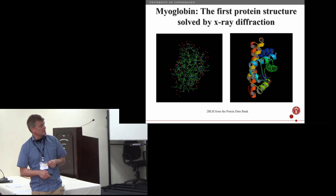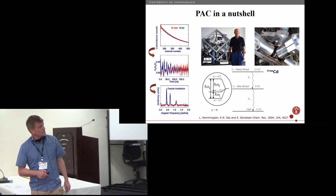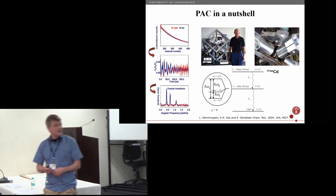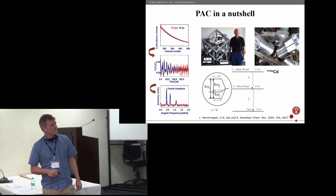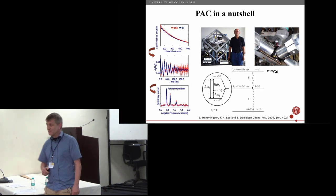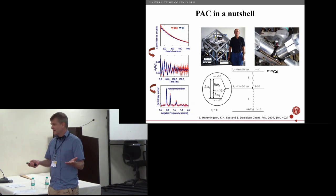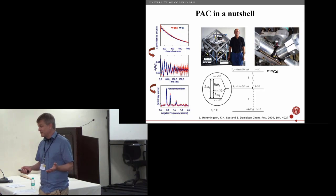So PAC spectroscopy—maybe I don't need to have this slide for this audience really. You know there's an angular correlation between the two gamma rays in this gamma-gamma cascade. For chemists that is entirely uninteresting of course in itself, although for nuclear physics it is interesting.